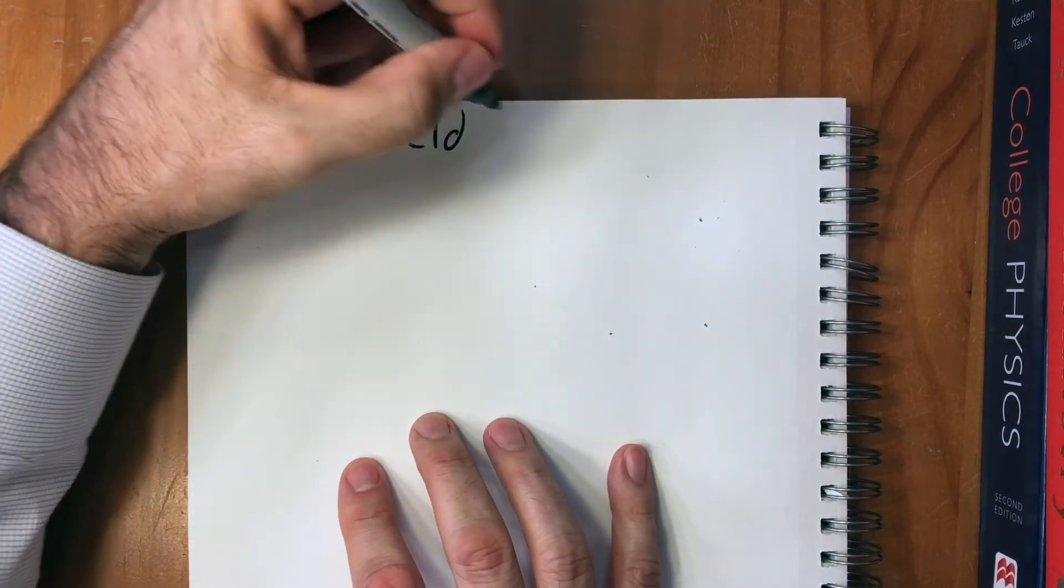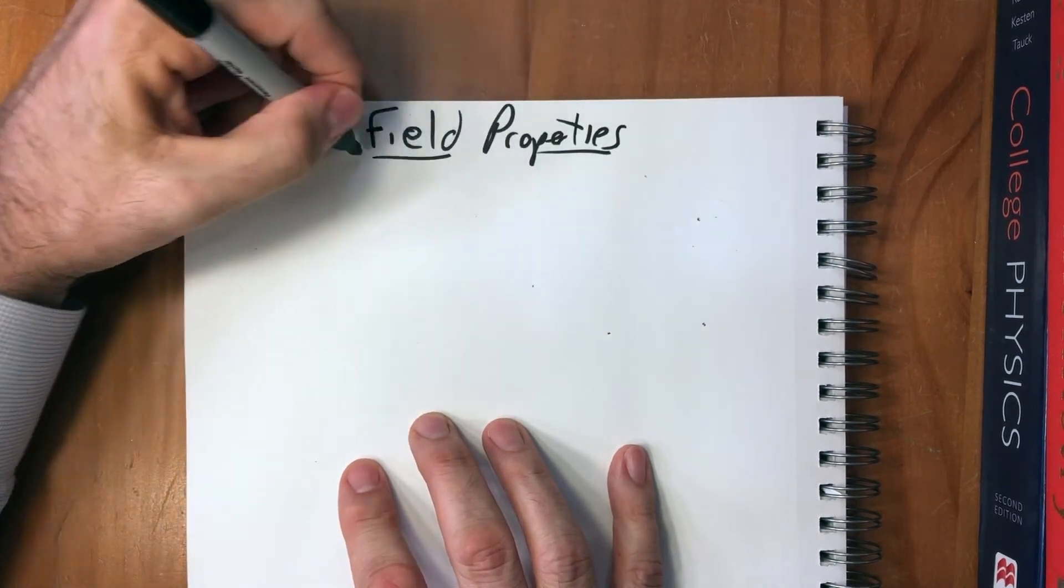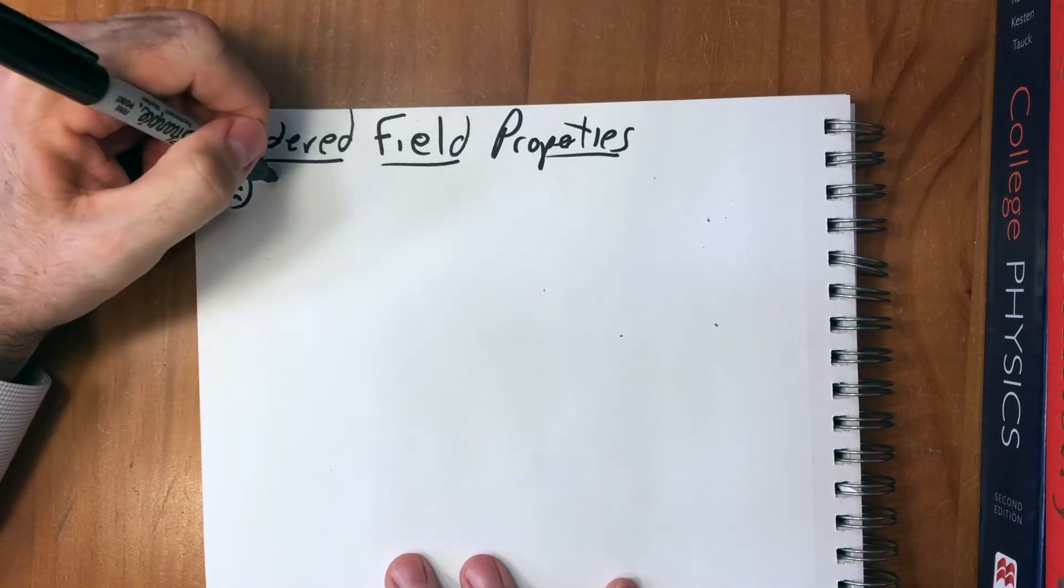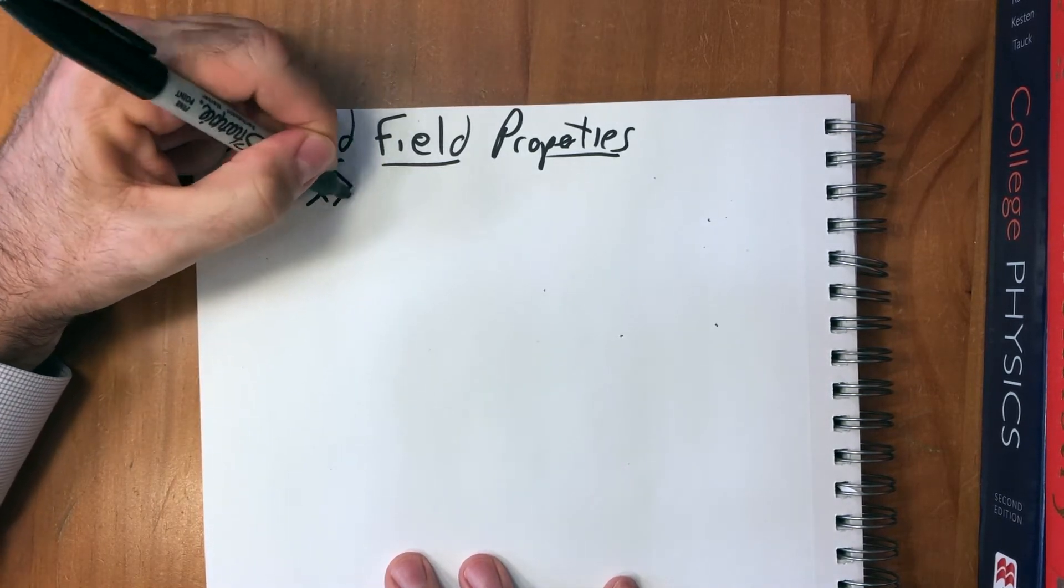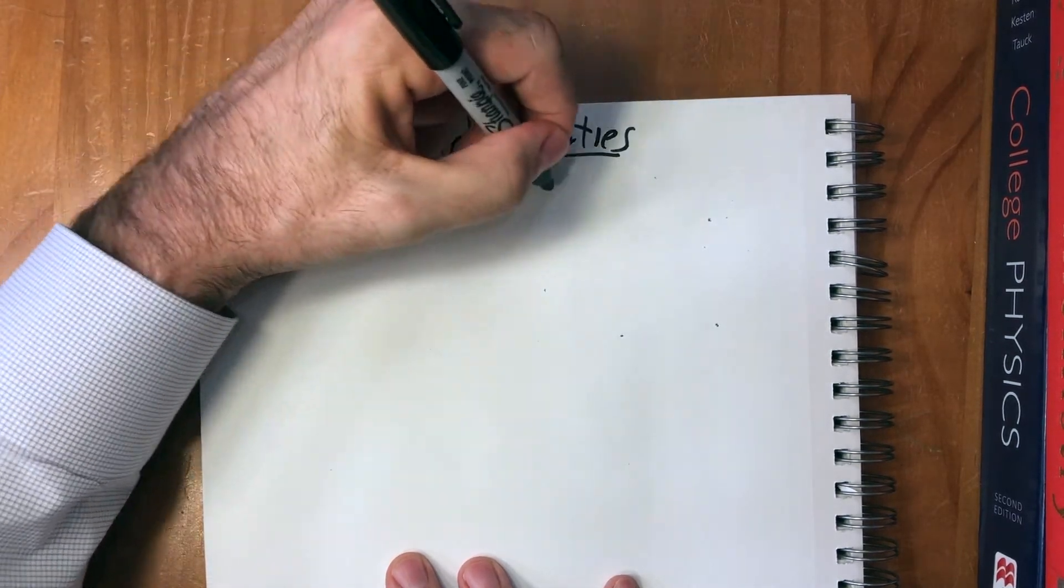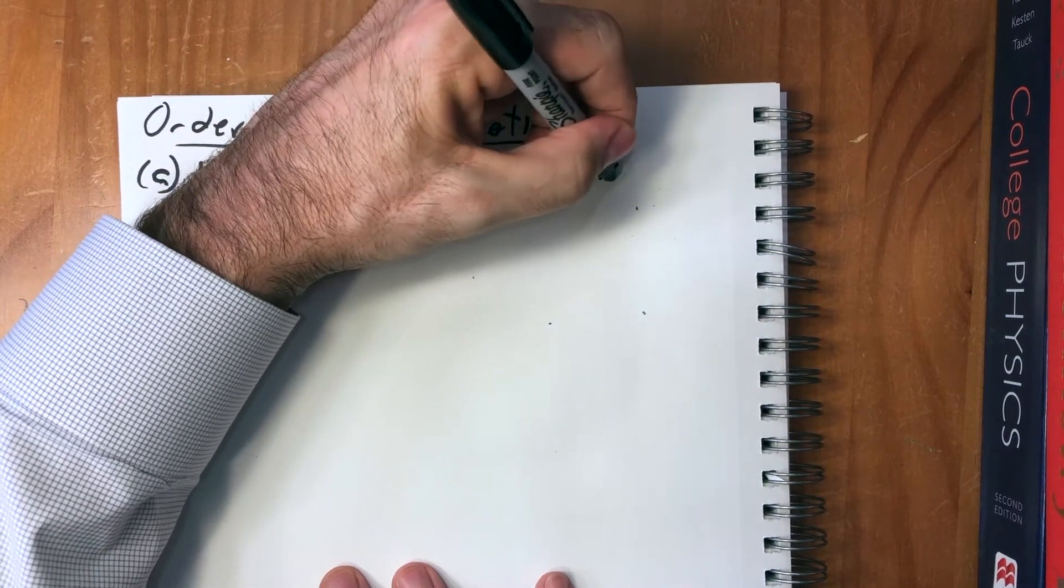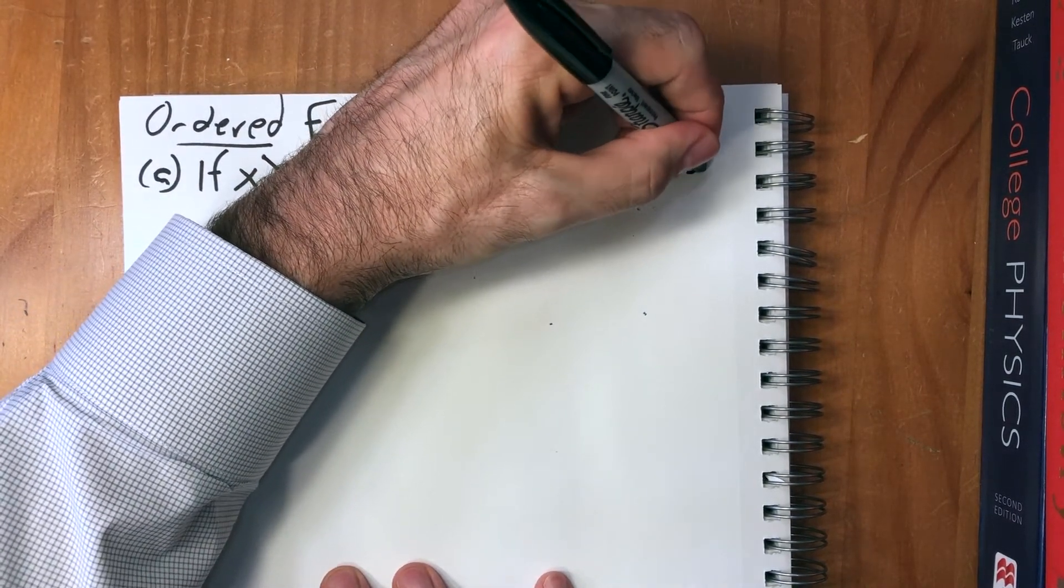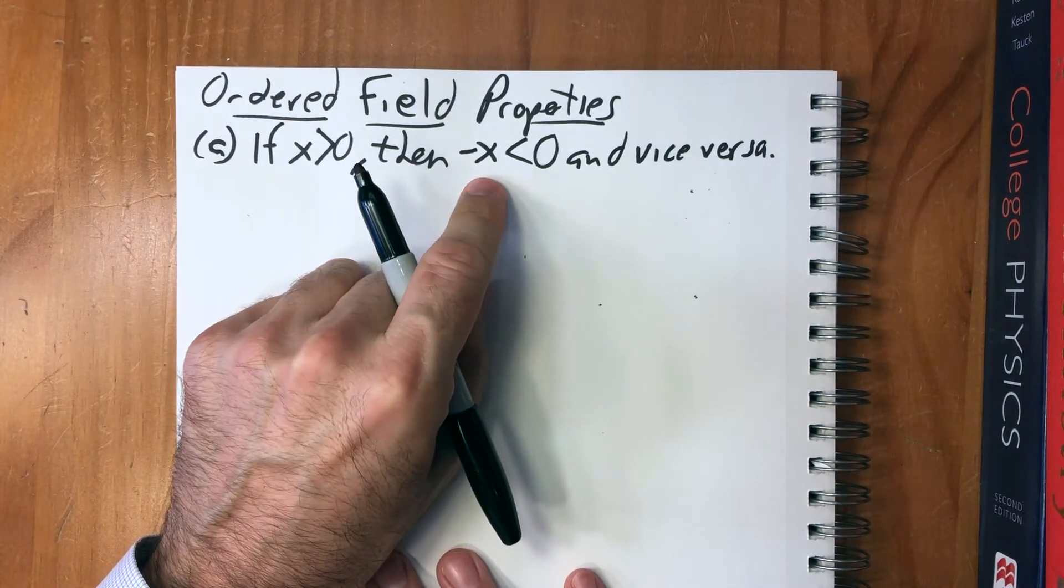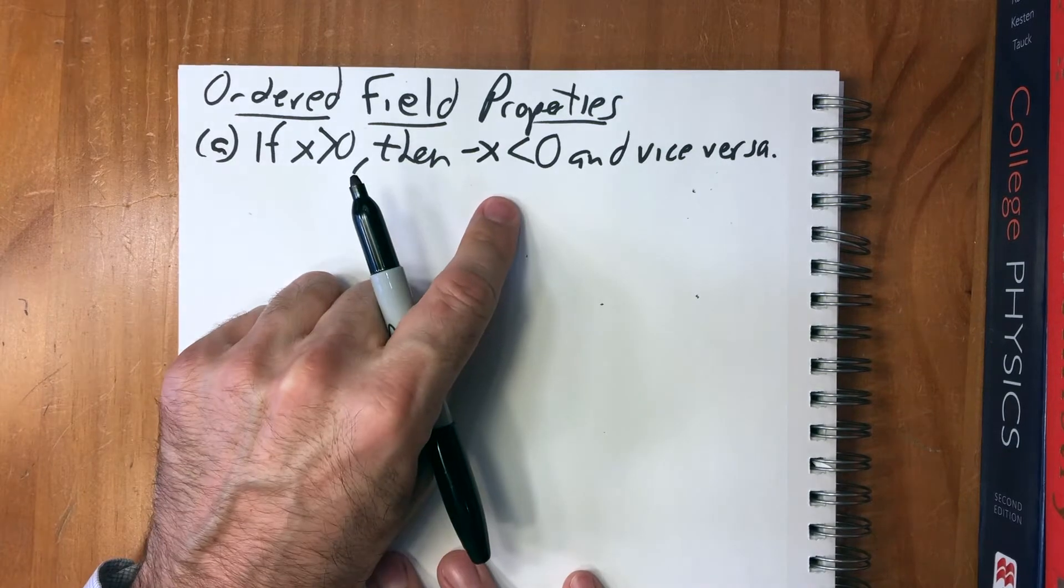Ordered field properties. A, if x is greater than zero then negative x is less than zero, and vice versa. So if x is positive then minus x is negative and if x is negative then minus x is positive.